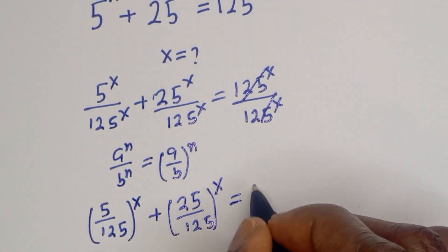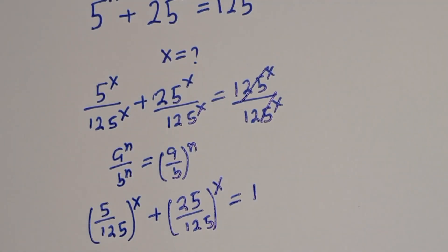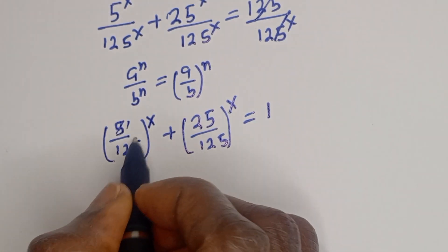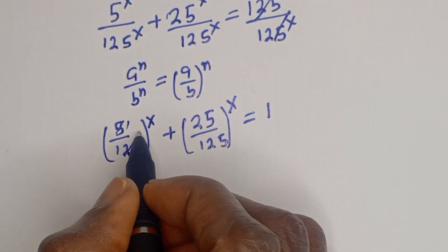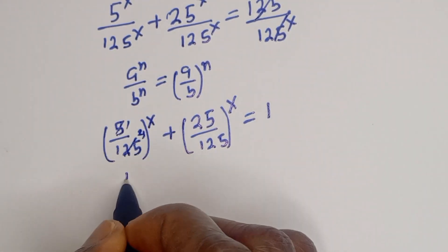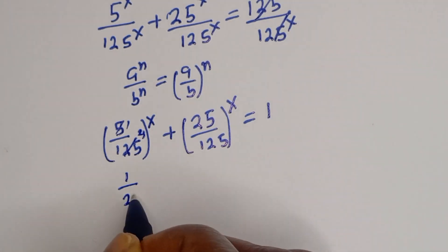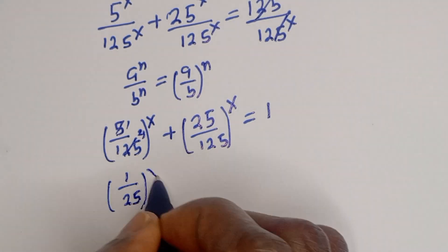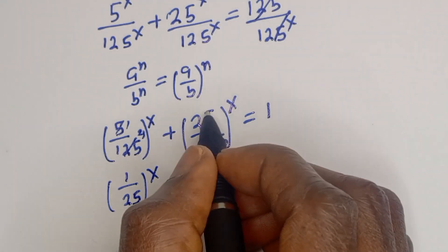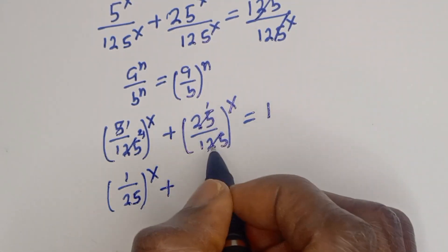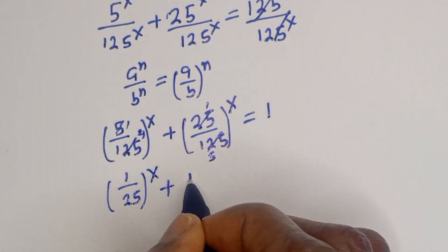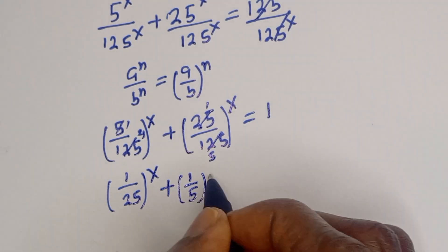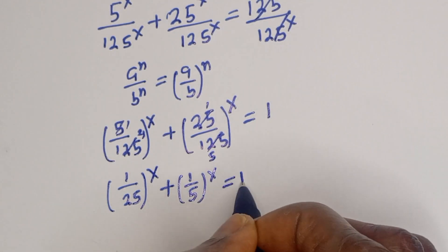Simplifying: 5 over 125 is 1/25, and 25 over 125 is 1/5. So this becomes (1/25) to the power of x plus (1/5) to the power of x is equal to 1.